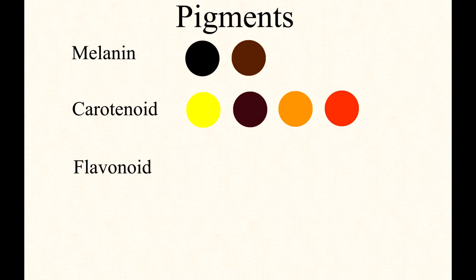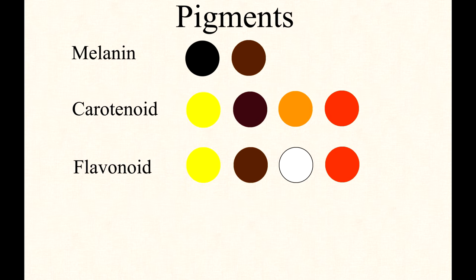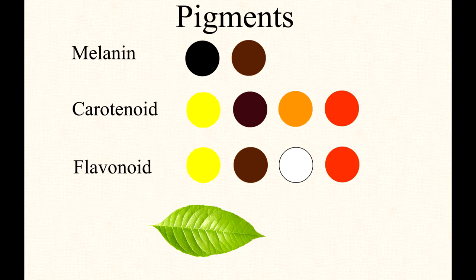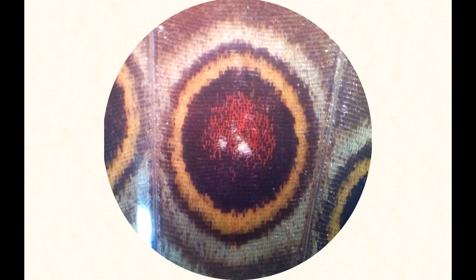Butterflies also have flavonoids that are responsible for yellow, white, red, and brown colors. If butterflies eat leaves, a green color can appear that comes from chlorophyll in the leaves. Additionally, this could be a combination of structural blue colors and real yellow pigments. Usually one flake on a butterfly contains one pigment, so the patterns on the wings look mosaic.